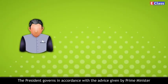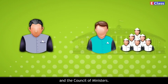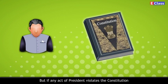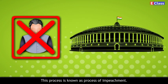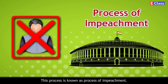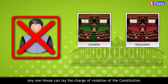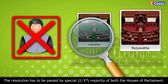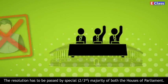According to the oath, the President bears the responsibility of protecting the Constitution and ensuring that the government runs as per the Constitution. The President governs in accordance with the advice given by the Prime Minister and the Council of Ministers. If any act of the President violates the Constitution, the Parliament has the authority to remove the President. This process is known as the Process of Impeachment. Any one House can lay the charge, and the investigation is carried out by the other House. The resolution must be passed by a special two-thirds majority of both Houses of Parliament.